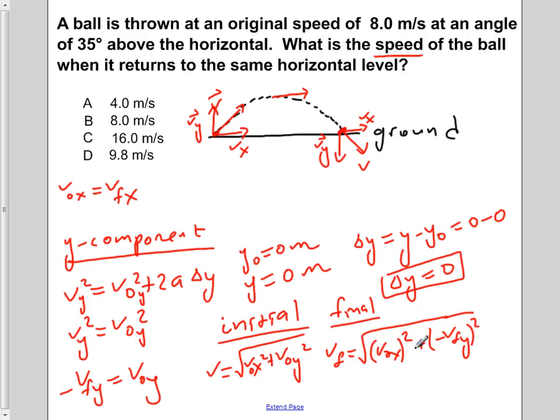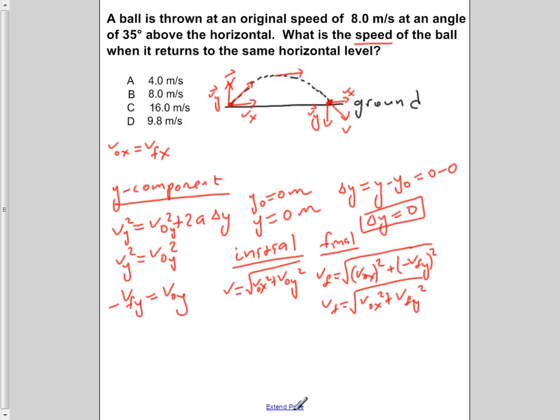But we know that if we square this, Vf is going to be equal to V0x squared plus Vf of y squared. But we know that f of y squared is simply just equal to V0y. So V of f is equal to the square root V0x squared plus V0y squared.